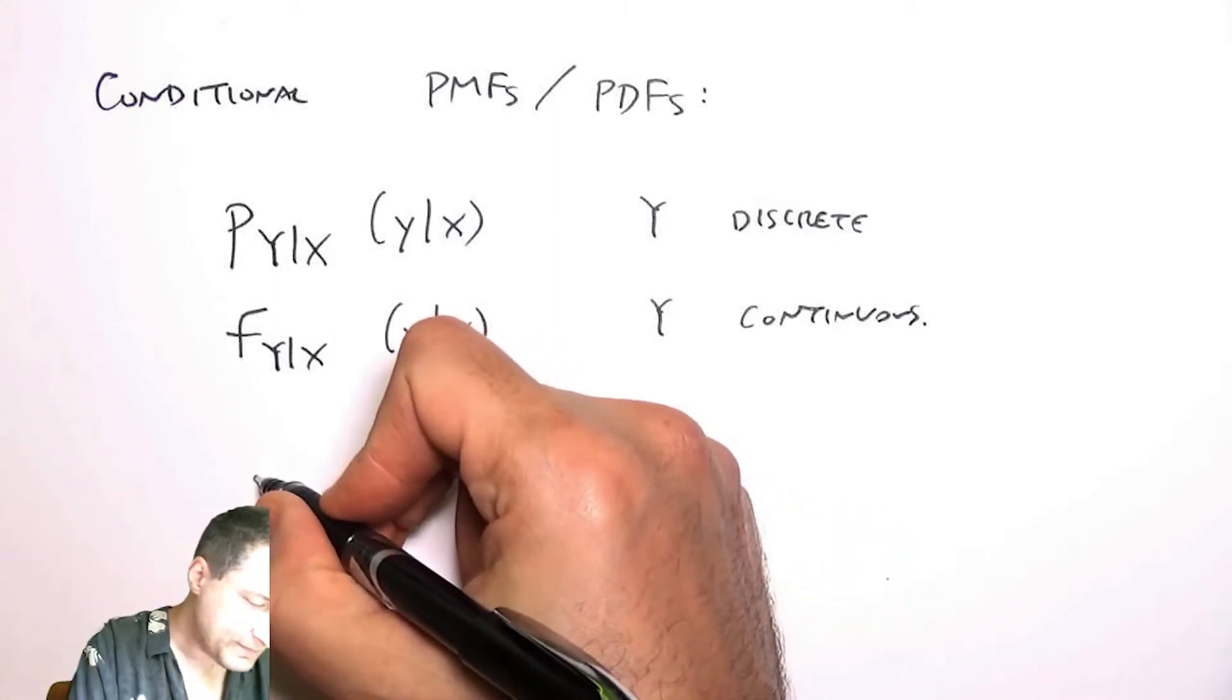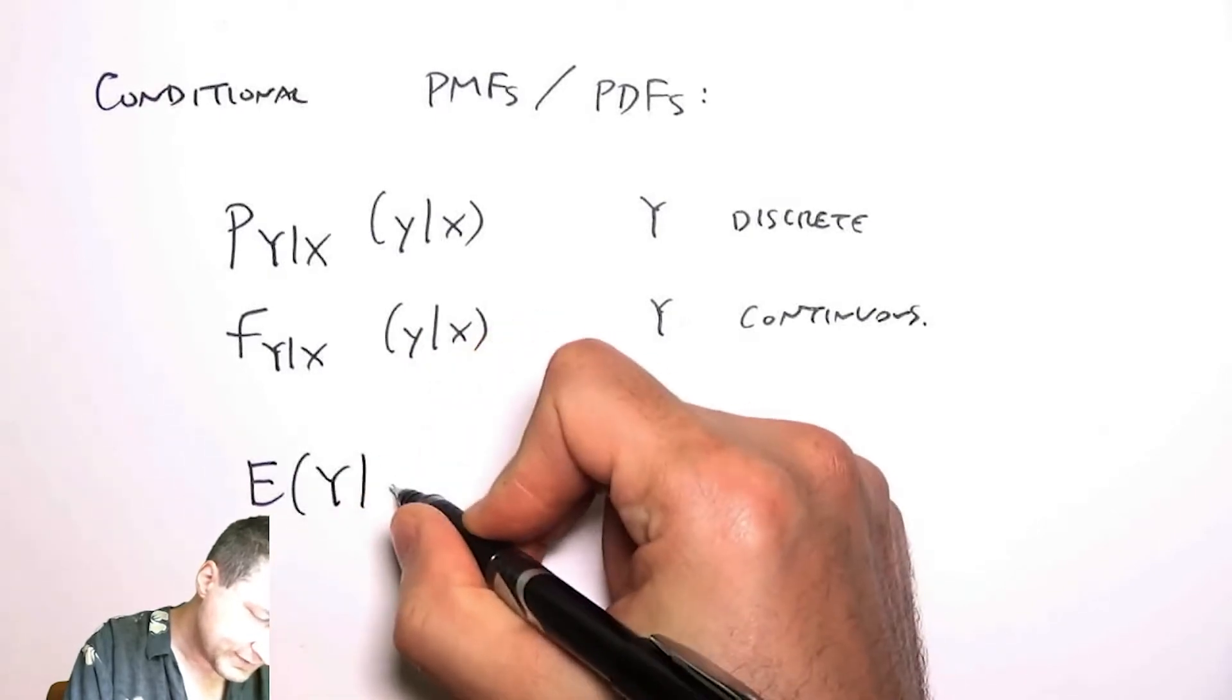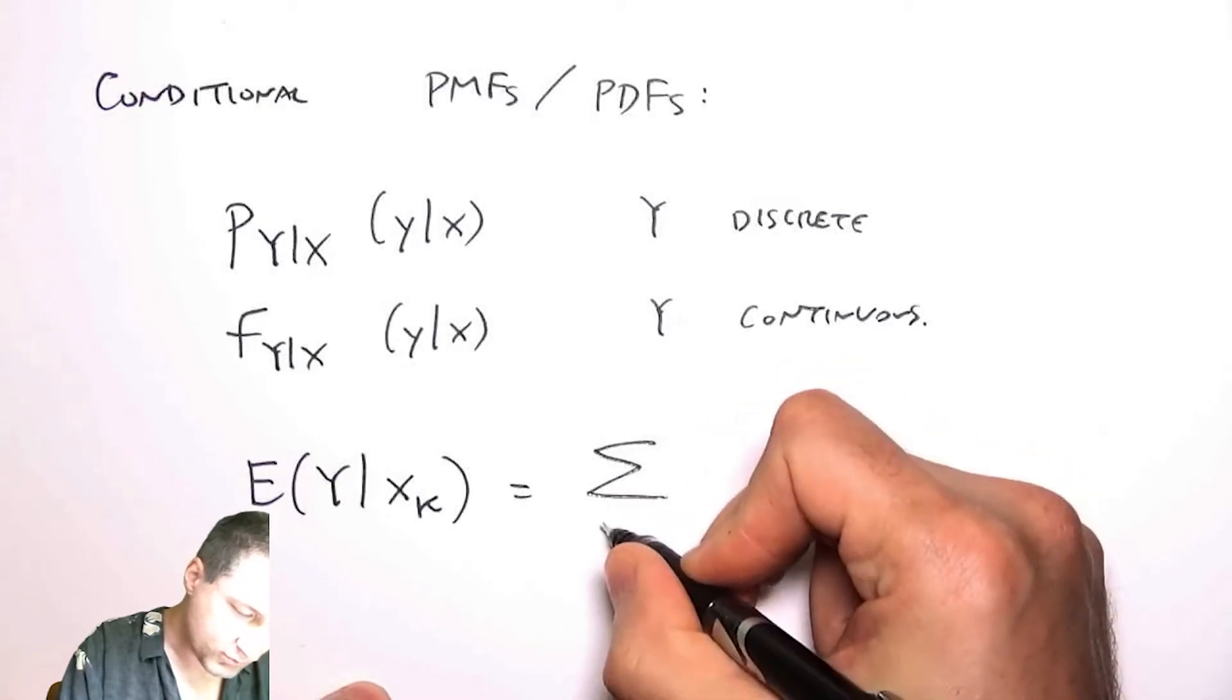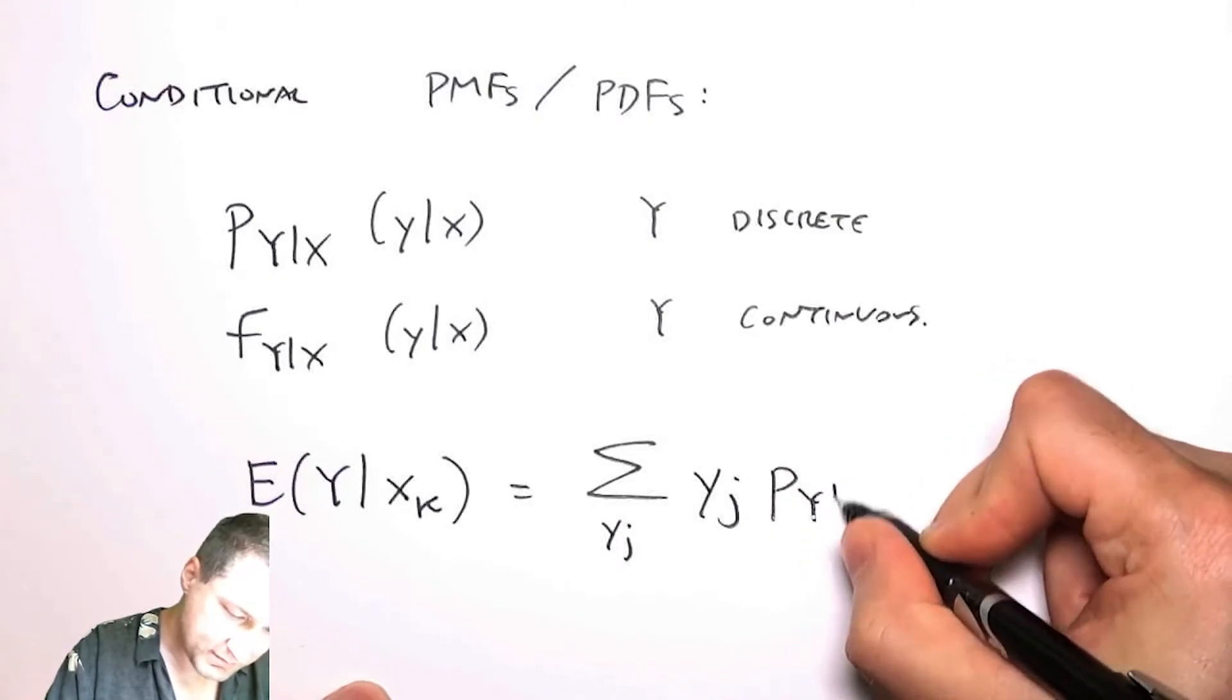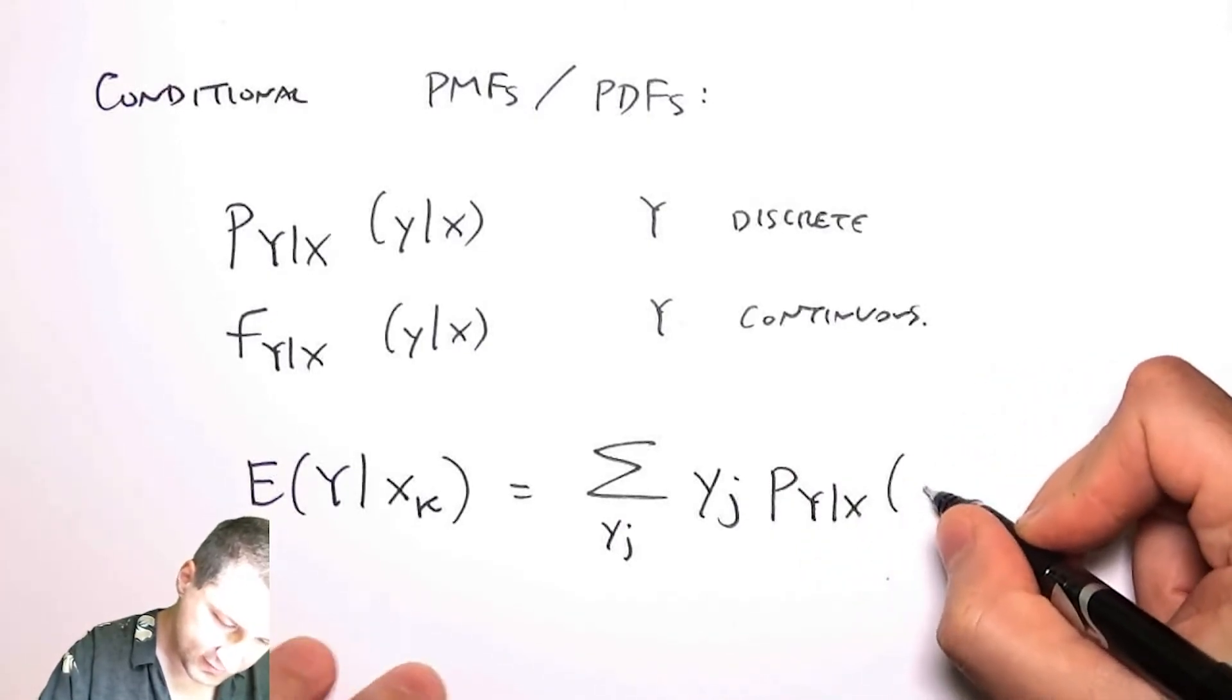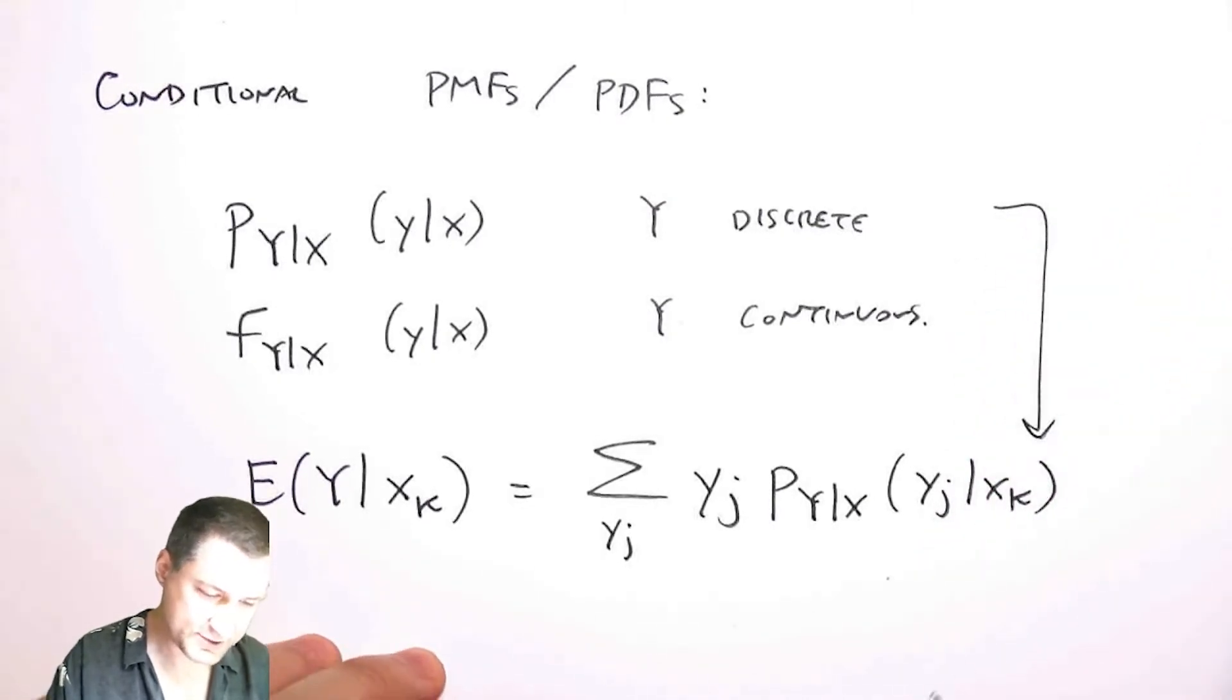So for example, the expected value of y, given some value of xk, when y is discrete, would be the normal way of saying y times the conditional PMF of getting that value. This would be the discrete version.